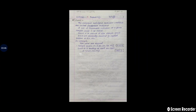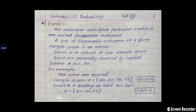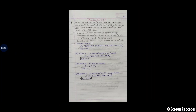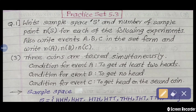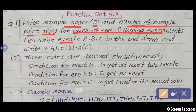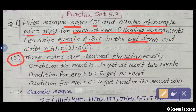In this way we solve questions related to events in Practice Set 5.3. The first question asks: write sample space S and number of sample points N of S for each experiment. Also write events A, B, C in set form and write N of A, N of B, and N of C. We solve option number 3: three coins are tossed simultaneously. In the last video we learned how to obtain results when we toss three coins simultaneously.